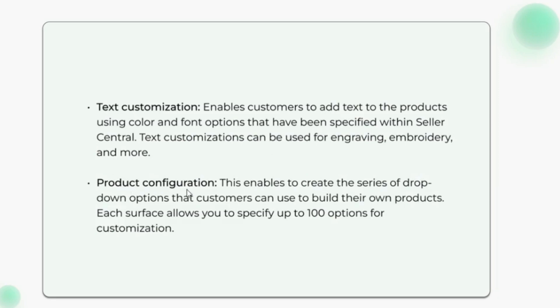Product configuration enables you to create a series of dropdown options that customers can use to build their own products. Each surface allows you to specify up to 100 options for customization.